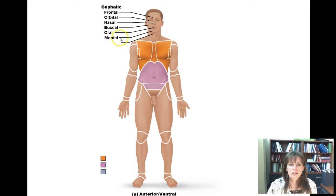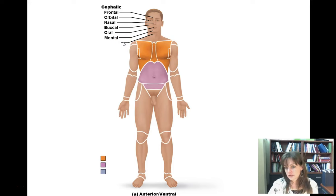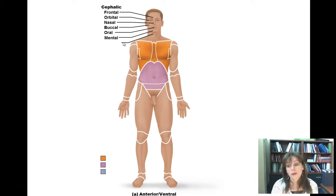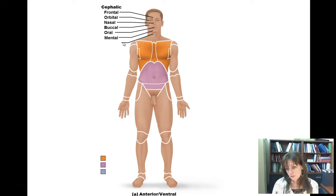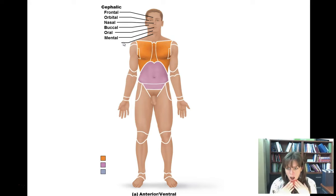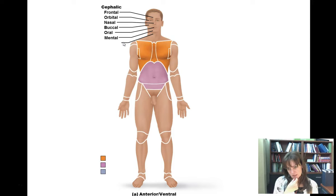Oral refers to the mouth — I think of oral hygiene, keeping your mouth clean. Now, put a star next to the mental region because people commonly get confused: hearing 'mental' they think it has to do with the head or the brain, but it actually refers to the chin. The way I remember it is — if somebody's acting mental I might go 'oh' and touch my chin. Mental equals chin. Put a star by that one — it's counterintuitive.